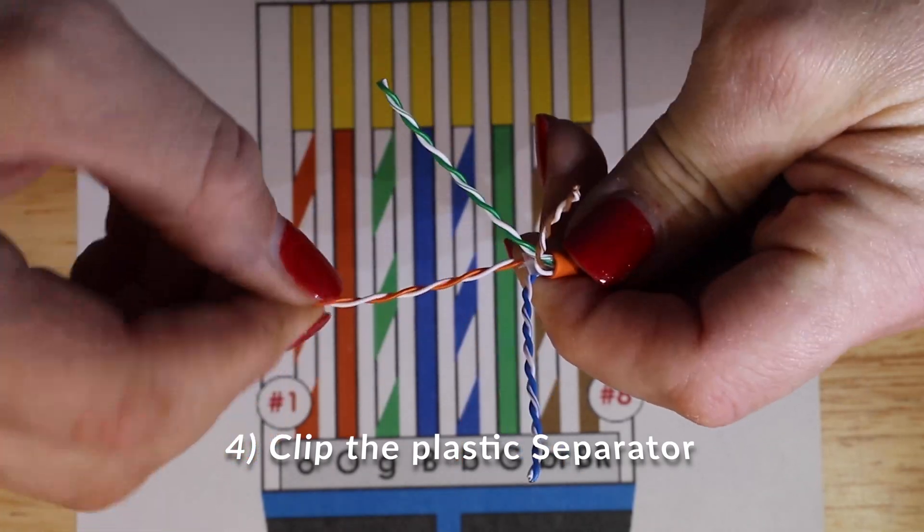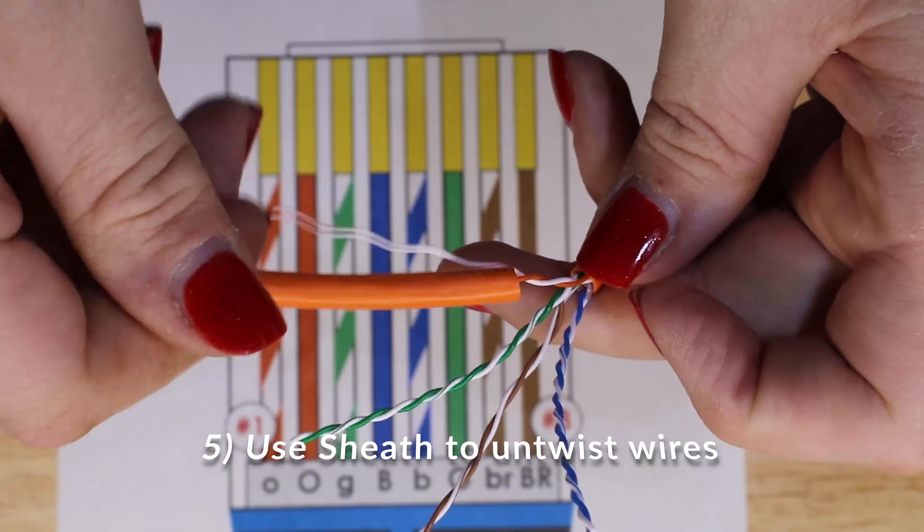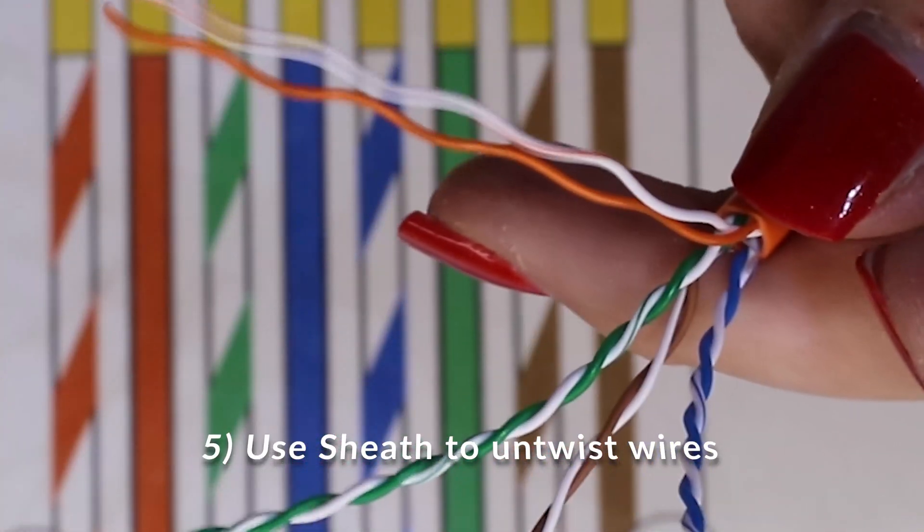Next up, we're going to take that sheath that we stripped off and use it to untwist all four pairs that are inside of the jacket.